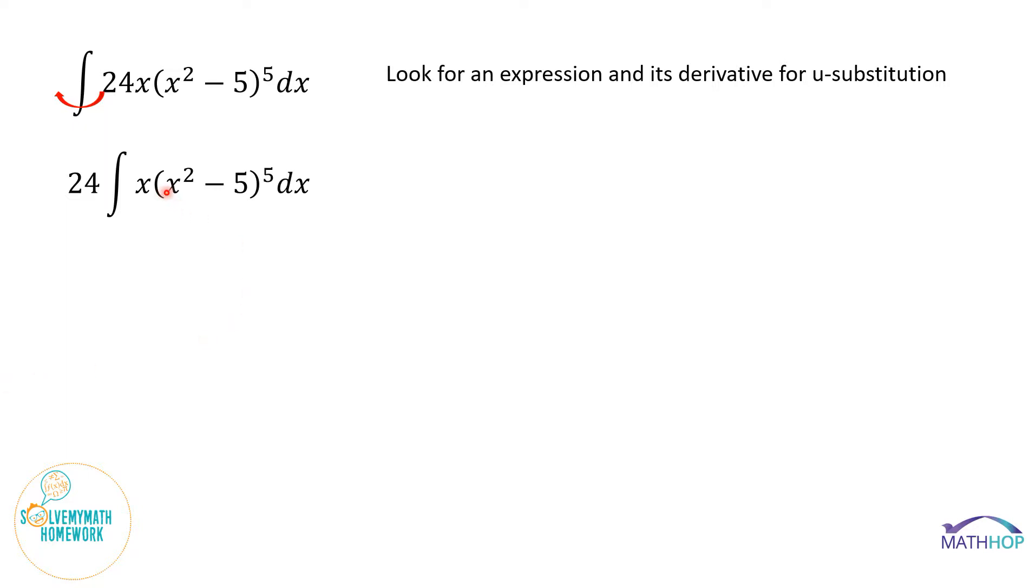So I have x squared minus 5 raised to the fifth. I would really like this to be u. If I let u be x squared minus 5, then the derivative of u would be 2x dx.